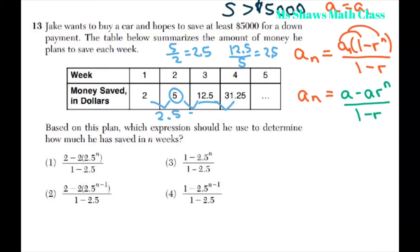So, the common ratio is 2.5. Whatever he gets, he gets 2.5 more for this one. So, all we're doing is filling in the formula.